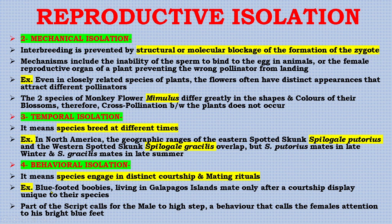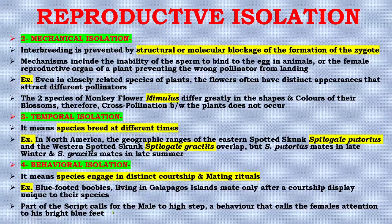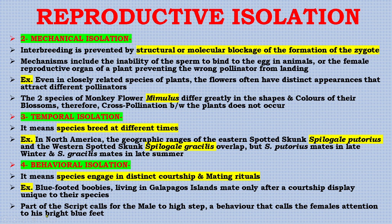Next is behavioral isolation, meaning species engage in distinct courtship and mating rituals. For example, blue-footed boobies living on the Galápagos Islands mate only after a courtship display unique to their species. Part of the display calls for the male to high-step, a behavior that draws the female's attention to his bright blue feet.